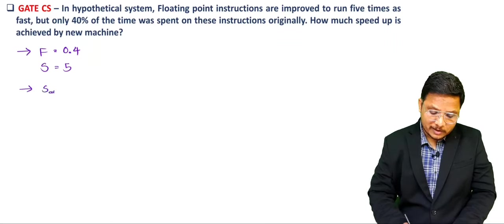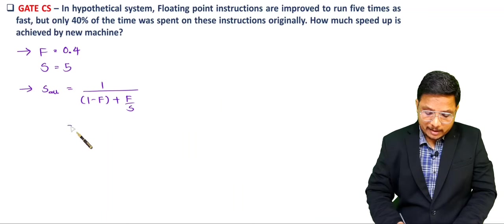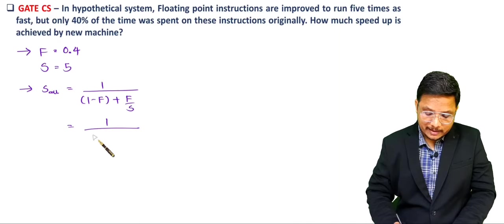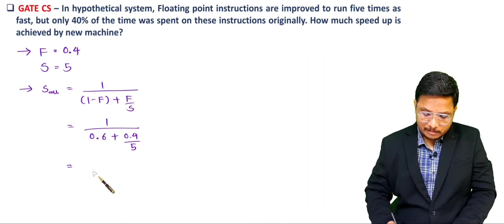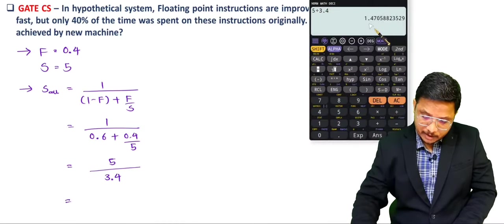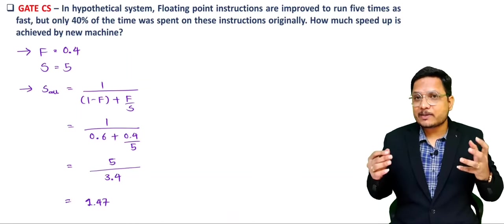As per Amdahl's law, overall speedup = 1 / ((1 - F) + F/S). Substituting: 1 / ((1 - 0.4) + 0.4/5) = 1 / (0.6 + 0.08) = 1 / 0.68 = 1.47. By using Amdahl's law we can solve this type of question.